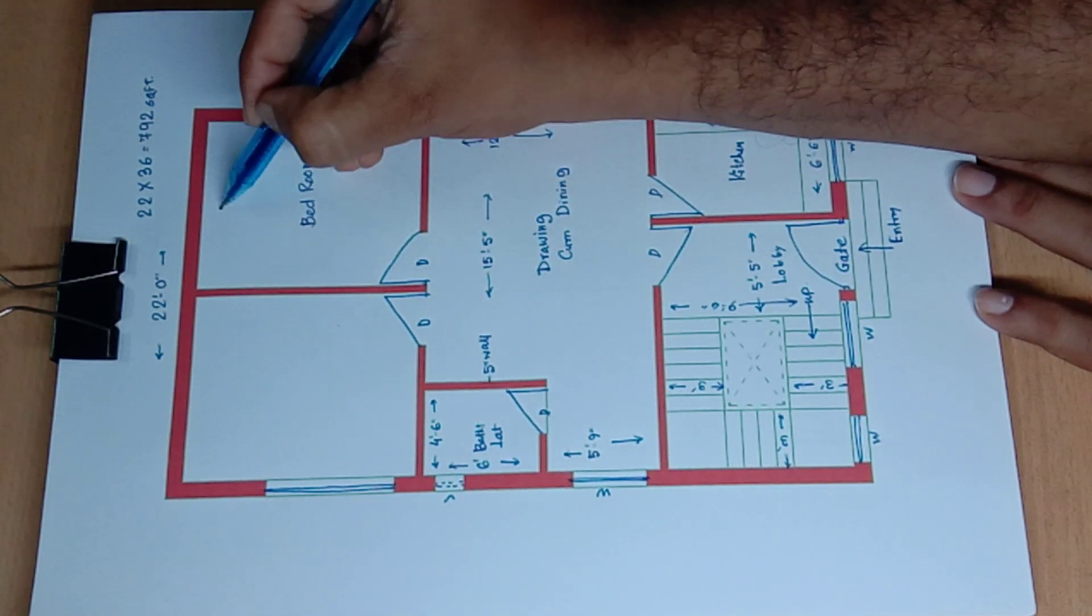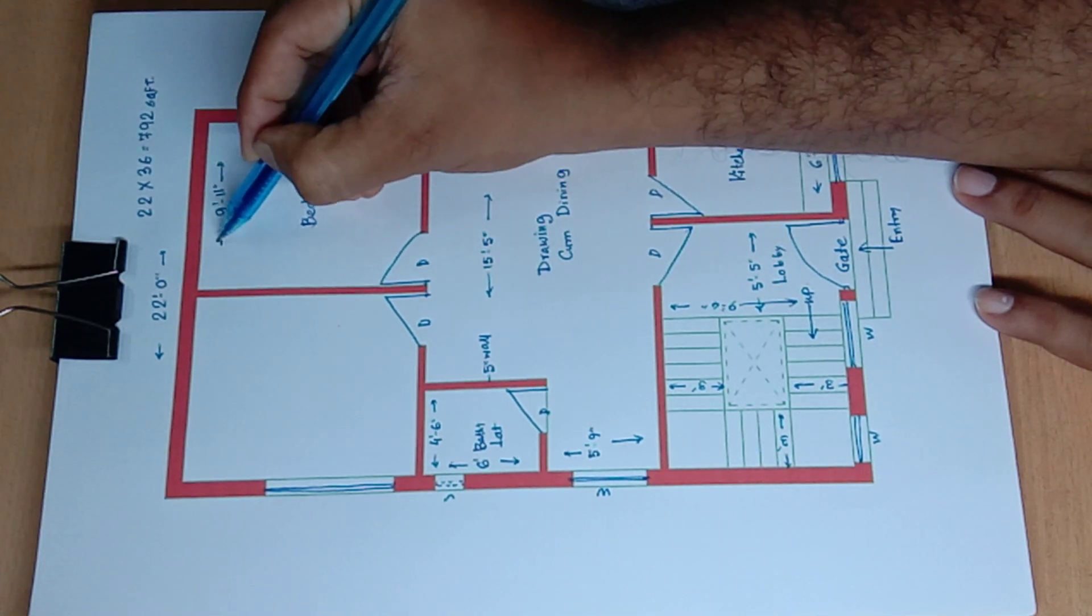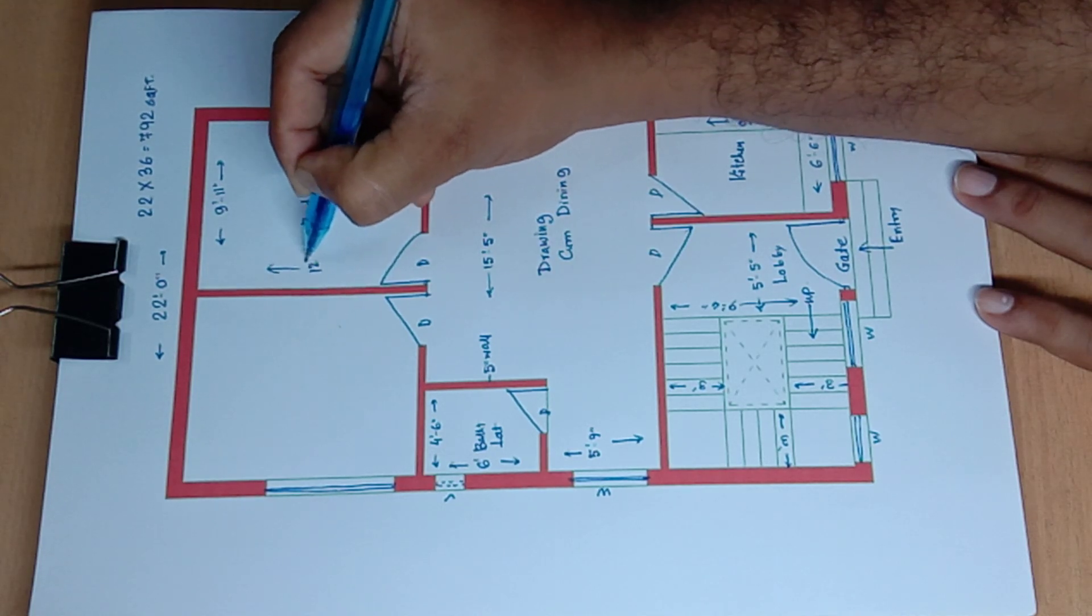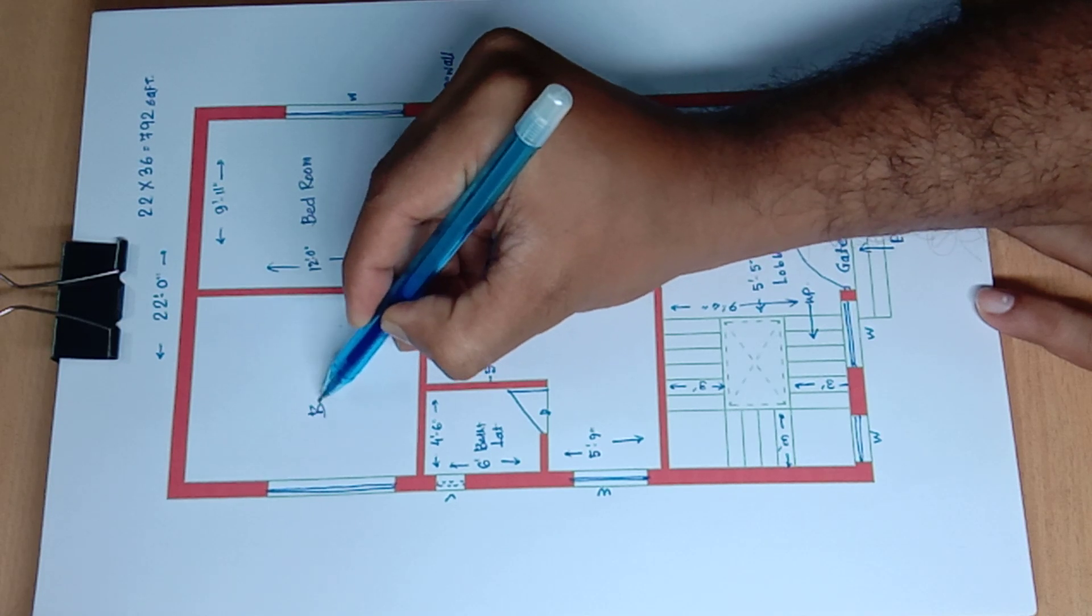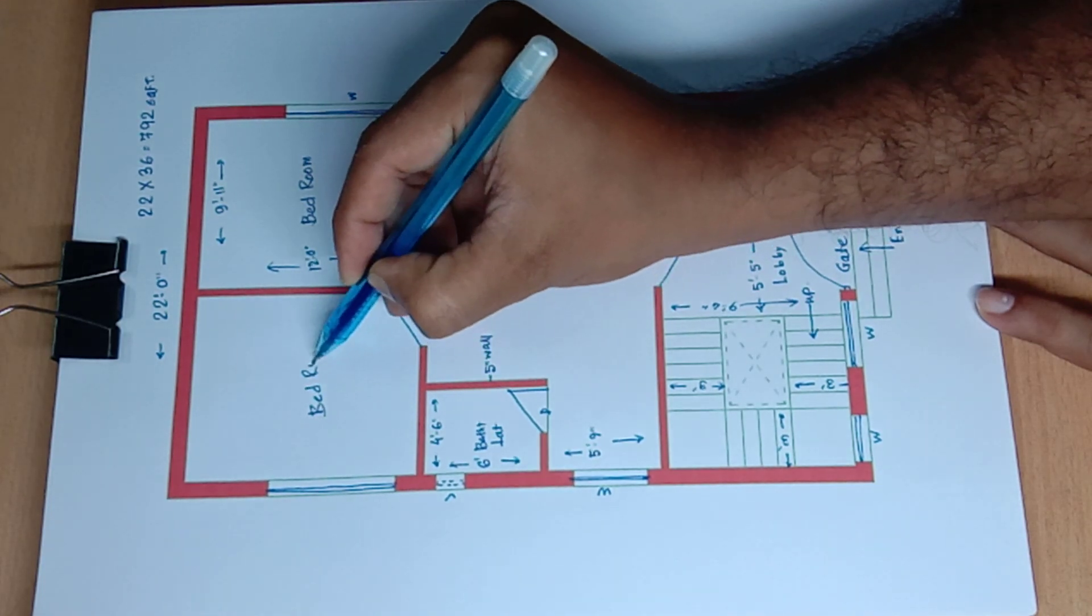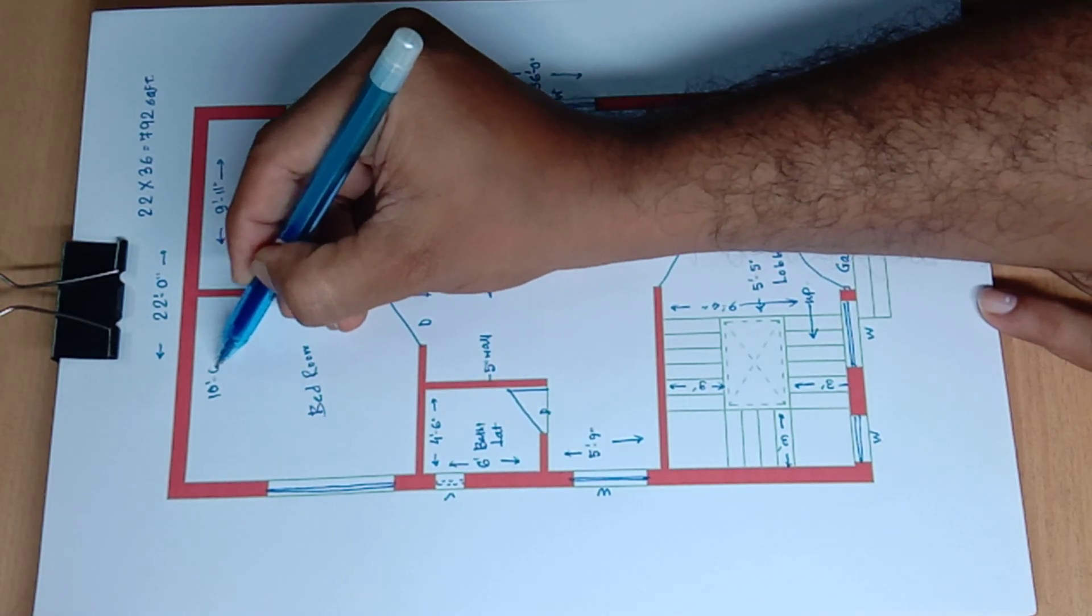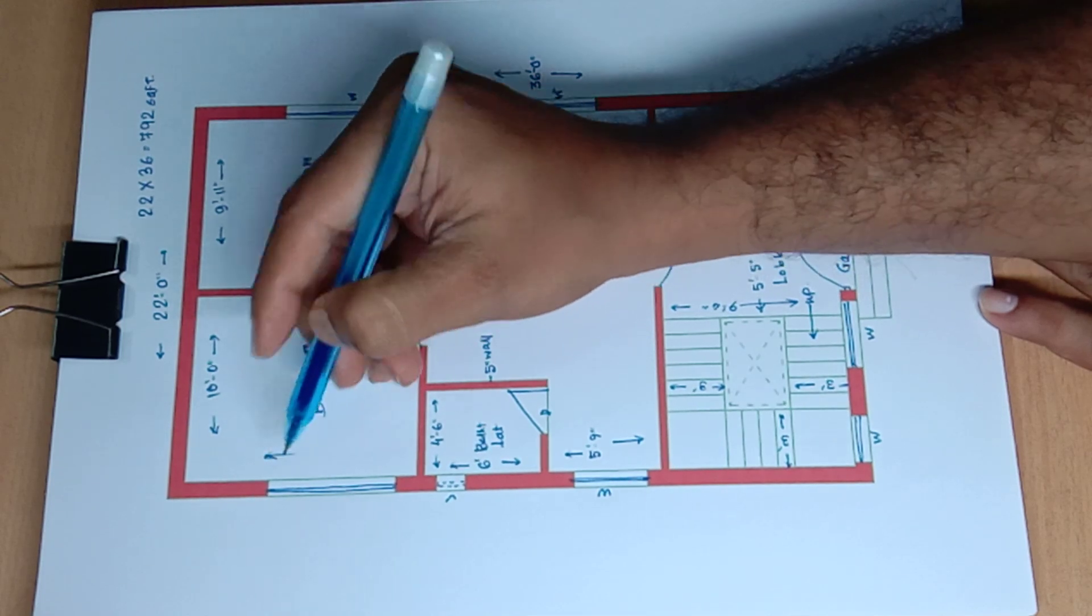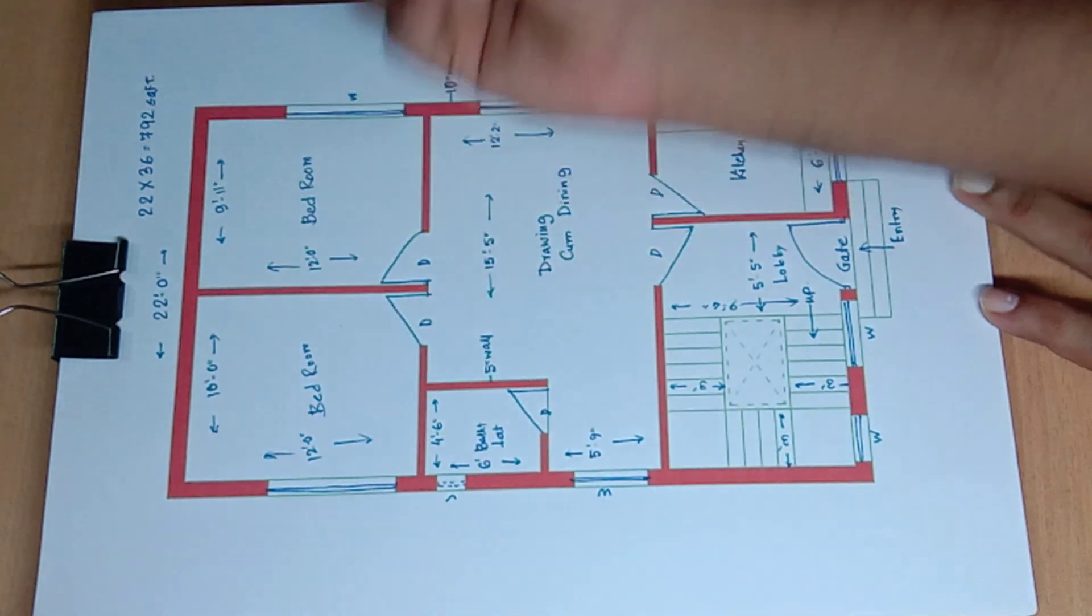Bedroom. 9 feet 11 inch and 12 feet 0 inch and 12 feet 0 inch. Next bedroom. 10 feet, 10 feet 0 inch. 12 feet 0 inch, 12 feet 0 inch.